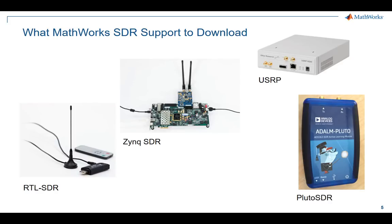The Pluto SDR provides RF coverage from 70 MHz to 6 GHz with both transmit and receive capability, for roughly 100 to 150 US dollars. And finally, if you are operating under a shoestring budget, you can use the RTL-SDR. It offers a receive-only RF range of 24 MHz to nearly 1.8 GHz for only 20 US dollars.